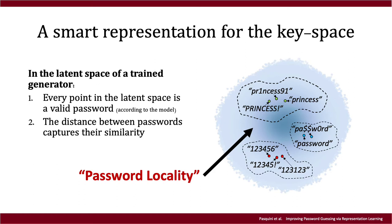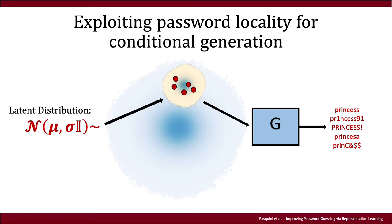Being aware of the password locality property allows us to exploit the password generation process of a deep generative model in a different way. As introduced before, we can generate passwords by simply sampling points from the latent distribution. However, this procedure does not give us any control over the kind of passwords we generate. By exploiting the natural organization of the latent space, we can force the generator to produce specific classes of passwords by focusing our exploration on specific zones — by moving the mean and reducing the scale of the sampling distribution.